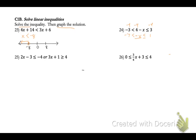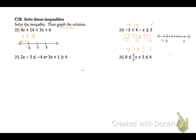Now we're going to divide by that negative, so we get 7 is greater than x, which is greater than or equal to positive 1. Draw your number line and plot positive 1 and 7. We'll have a solid dot at positive 1 and an open circle at 7. We want everything that's less than 7 but at the same time greater than positive 1, so shade between them.